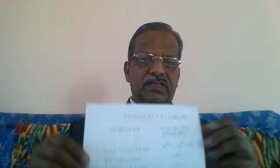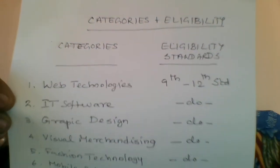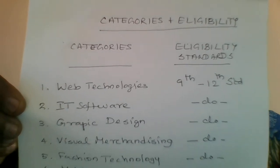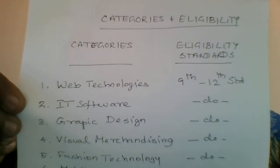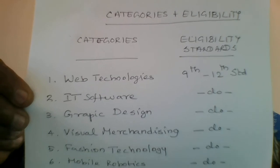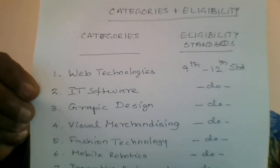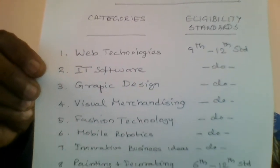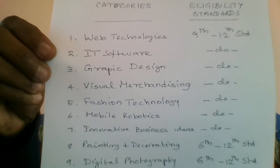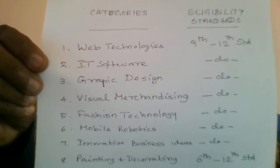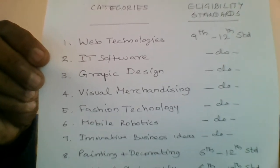So what is this competition all about? It is divided into 10 categories. In each category, if you have any idea or something you want to develop, you can write it up during registration. The categories include web technologies (for 9th to 12th standard), IT software, graphic design, visual merchandising, fashion technology, mobile robotics, and innovation business ideas — all for 9th to 12th standard students.